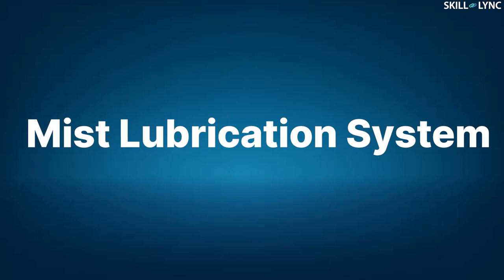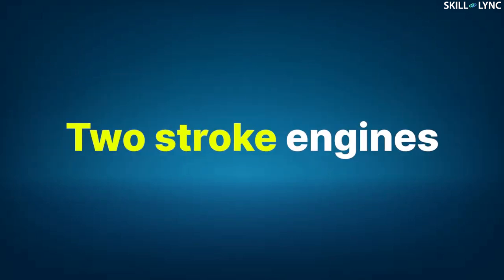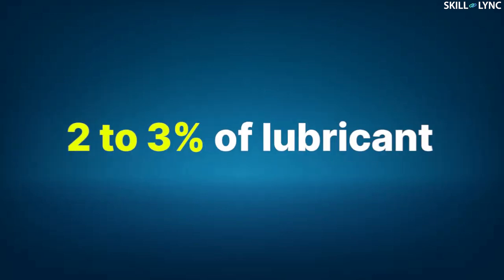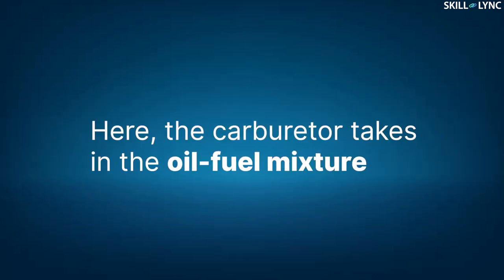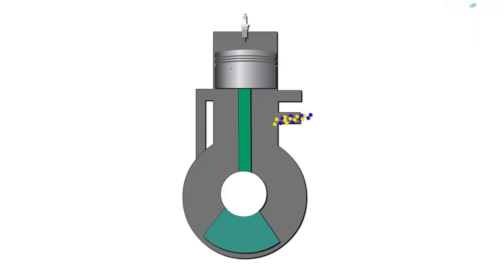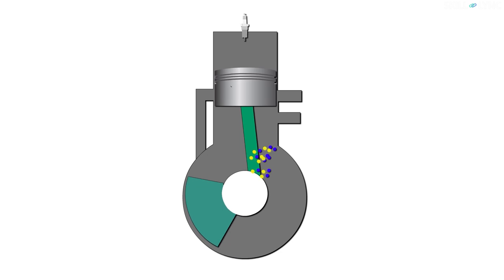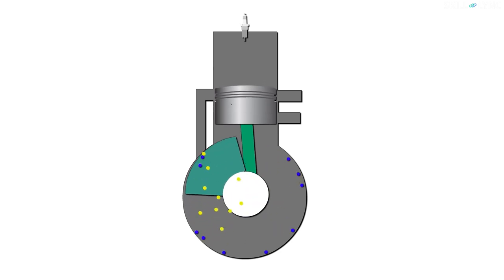Let's start with the first type: the mist lubrication system. This type of lubrication system is used for two-stroke engines. The lubrication process is achieved by adding two to three percent of lubricant to the fuel. The carburetor takes in the oil-fuel mixture, which gets introduced into the engine. Inside the engine, the fuel gets vaporized but the oil in the form of mist deposits over the bearings and lubricates them.